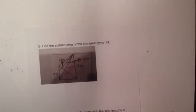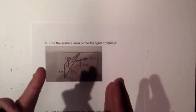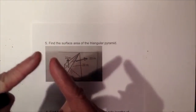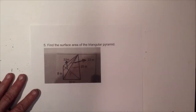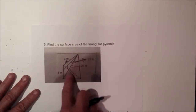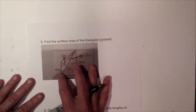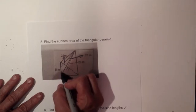Now let's find the surface area of a triangular pyramid. A pyramid has a point at the top called an apex, which distinguishes it from a prism. Because each face has different dimensions, we'll need to find the area of each side separately. I'll highlight the first face and identify its measurements.